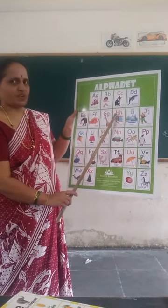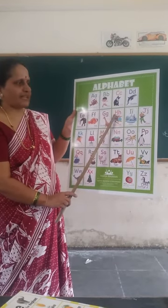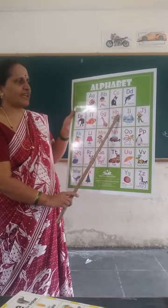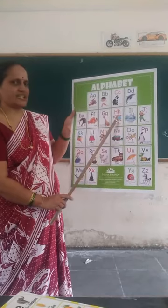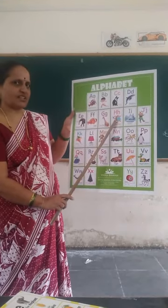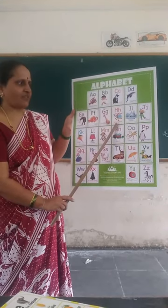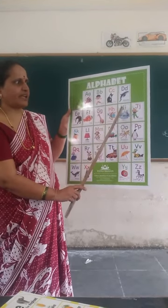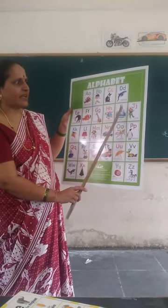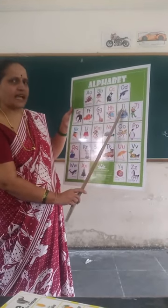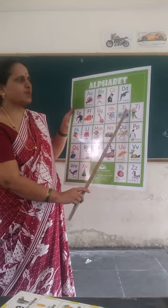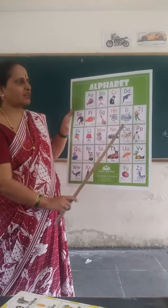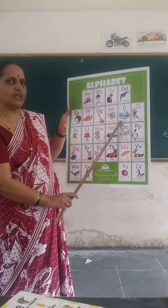Capital H. Small h. H for helicopter. Capital I. Small i. I for igloo.